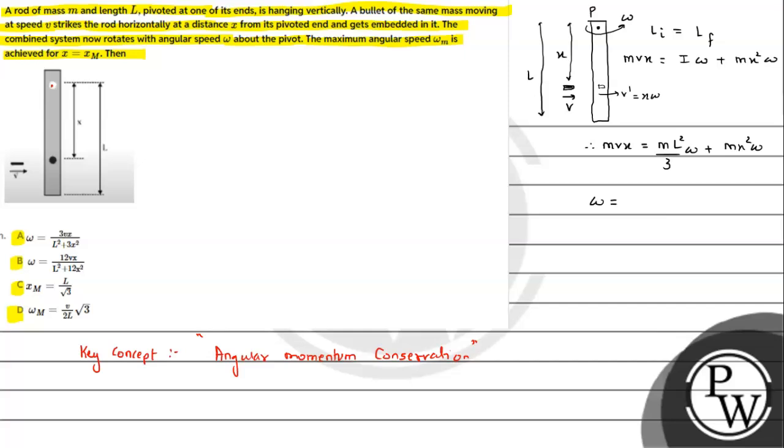We can write: omega will be equals to VX upon... taking common L square plus X square... which is 3VX upon L square plus 3X square. So this is the value of omega: 3VX upon L square plus 3X square. So this is expression 1, and if we look at option A, that will be matching with this. So omega we have got.